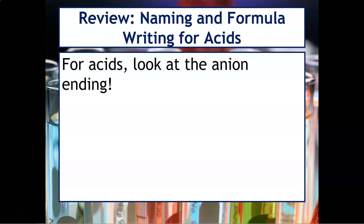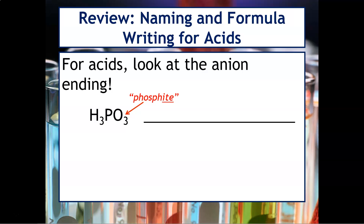For acids, you really want to focus on the anion. For example, if you look at H₃PO₃, you know it's going to be an acid because it contains hydrogen as the cation, but to name it you really want to focus on the anion. PO₃ is called phosphite, with the ending "-ite".